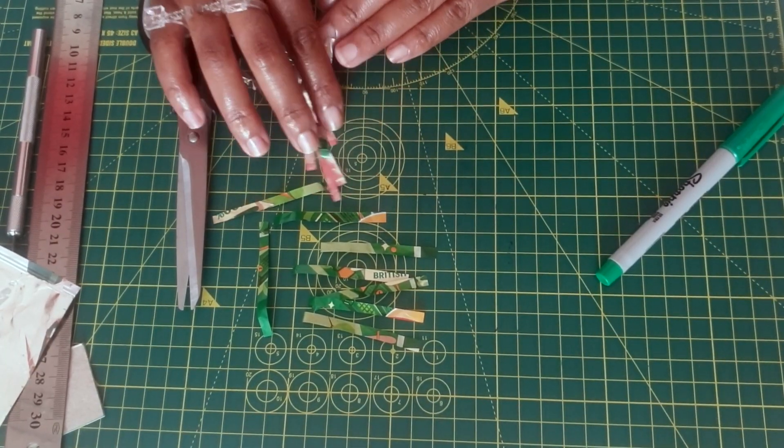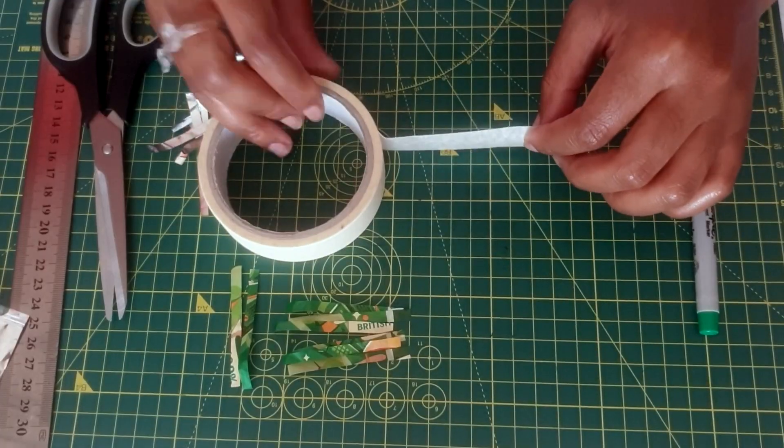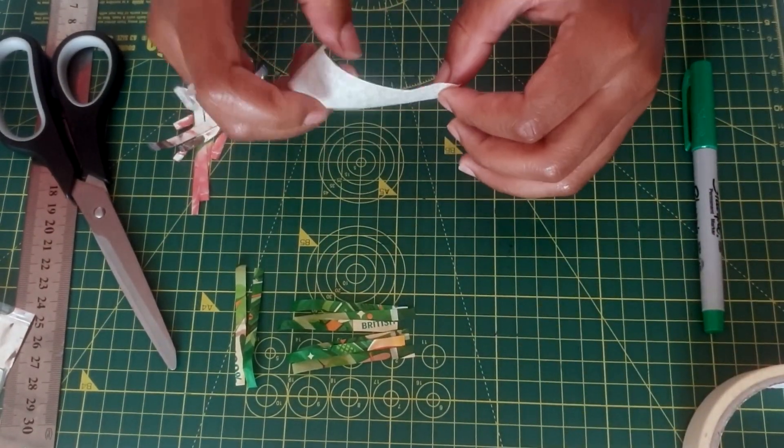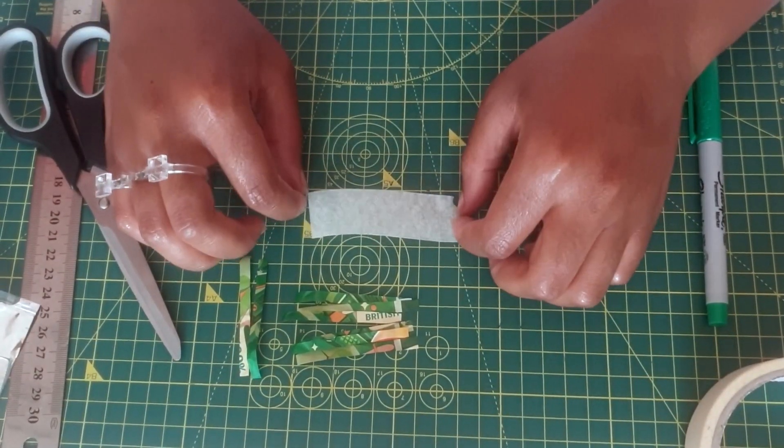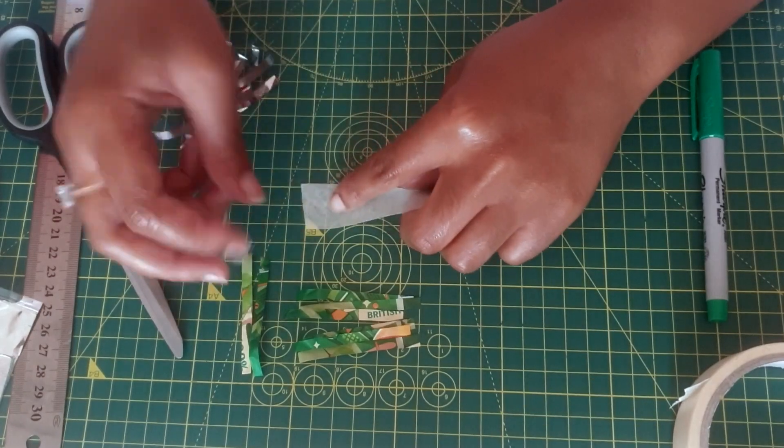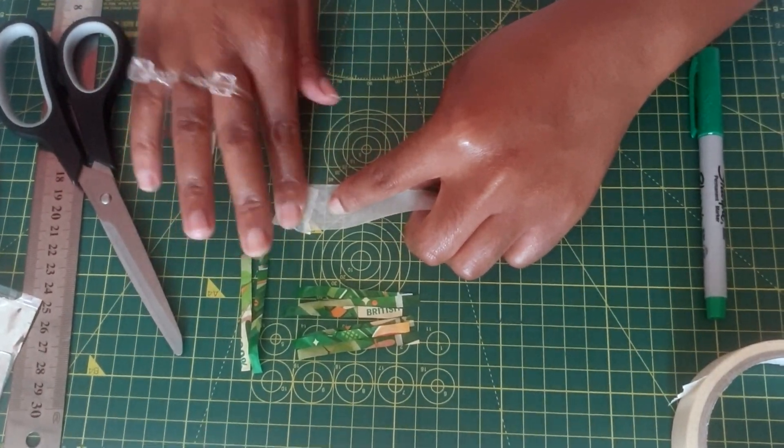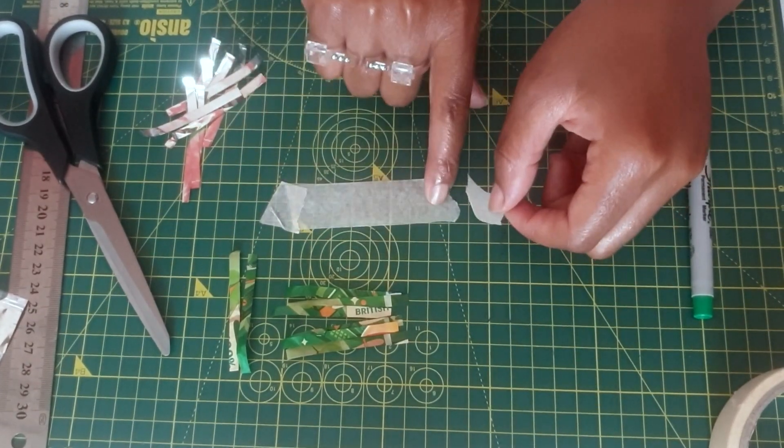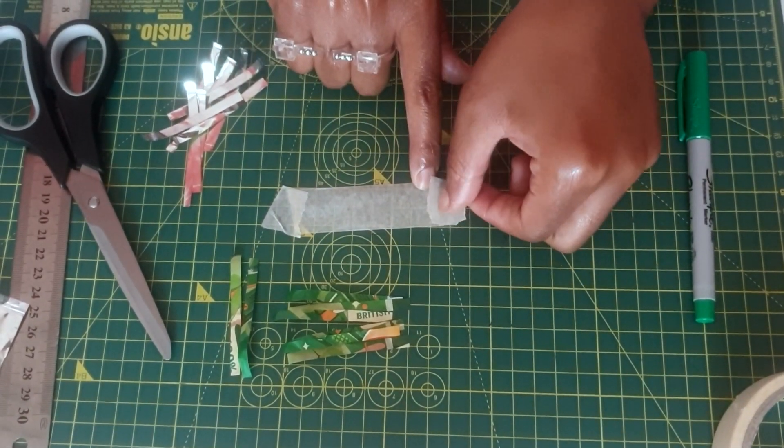Now you've got all of your strips, you can use some masking tape to create a sort of makeshift loom that will essentially hold your strips in place as you create that sequence that we previously mentioned.